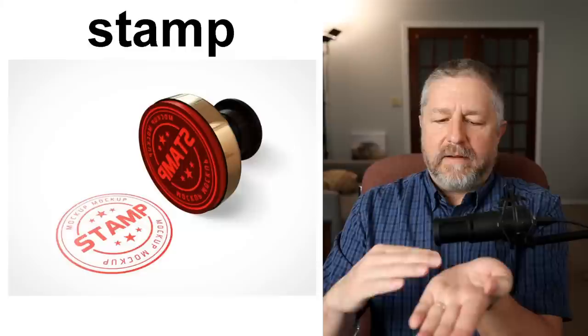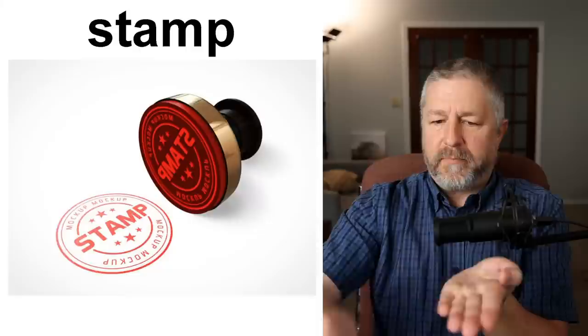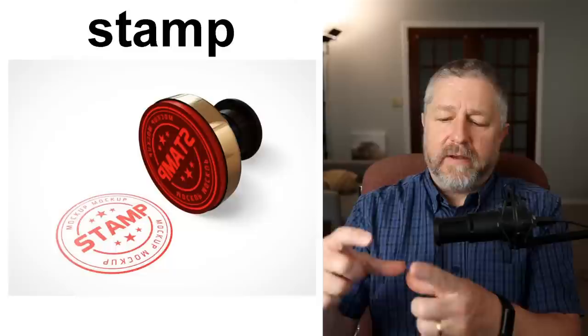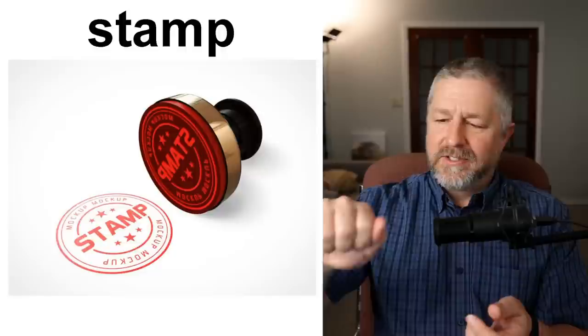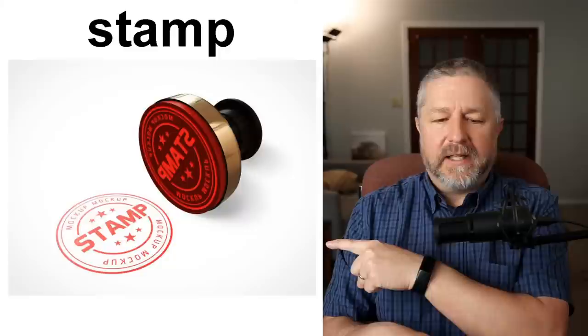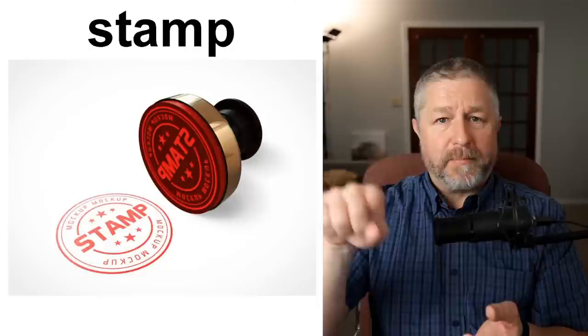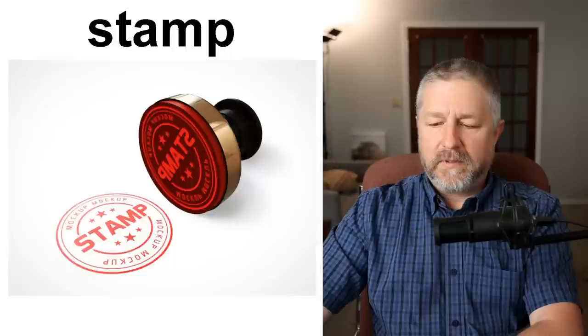Stamp. A stamp is usually something that has ink in it and you press it on a piece of paper. The thing is called a stamp, and the thing it leaves on the paper is also called a stamp. Jen puts her flowers in brown paper and we have a stamp with the name of our farm — we use the stamp to stamp the brown paper, so it has our stamp on it.